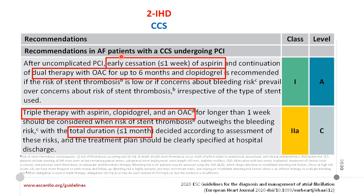For chronic coronary syndrome, patients are classified into two categories. If bleeding risk is high and ischemic risk is low, drop aspirin after one week and continue dual therapy with oral anticoagulant and clopidogrel for up to six months. If ischemic risk is high and bleeding risk is low, consider triple therapy with aspirin, clopidogrel, and oral anticoagulant for one month, then stop aspirin and continue on clopidogrel and oral anticoagulant.